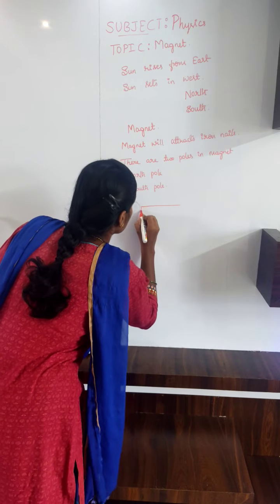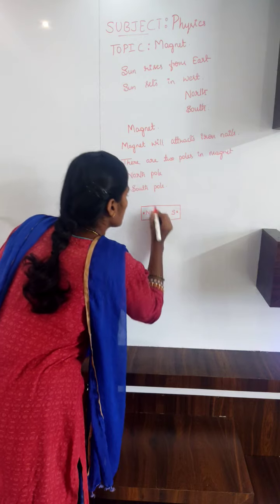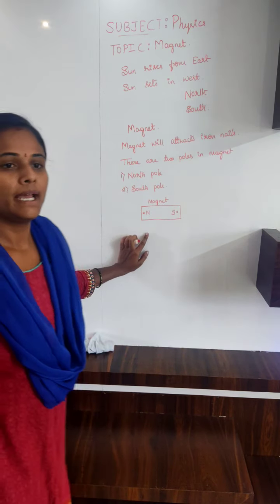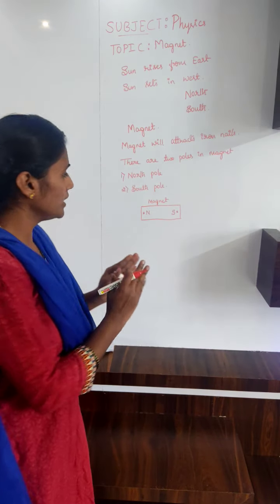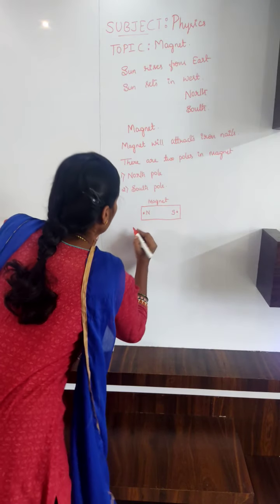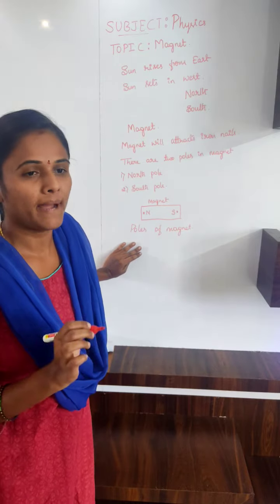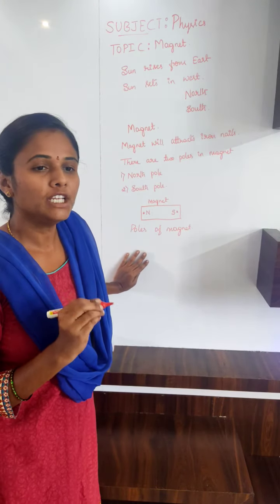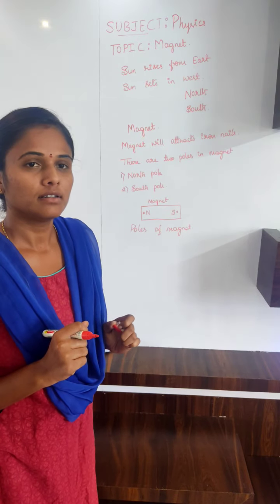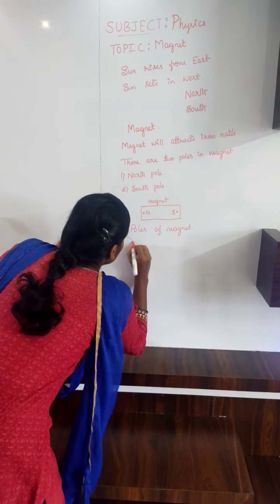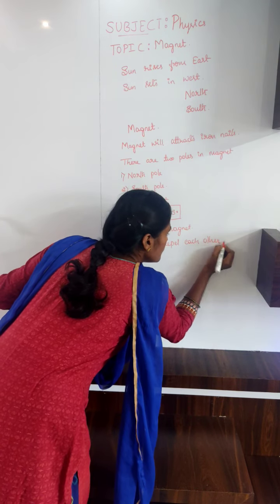Observe here. This is a magnet. The two regions towards the ends of a magnet where the force of attraction is highest are called the poles of the magnet. Now tell me, when we bring the north pole of a magnet near the north pole of another magnet, what will happen? It will repel each other. Very good — they repel each other.